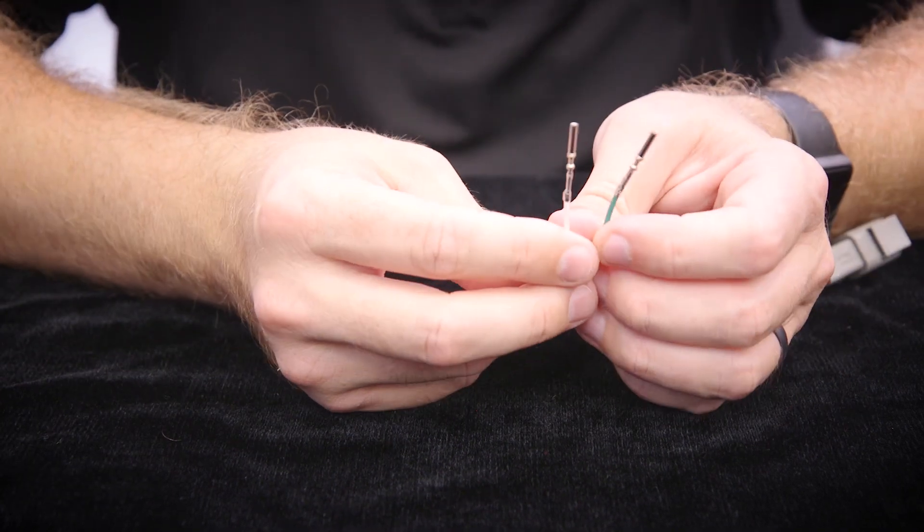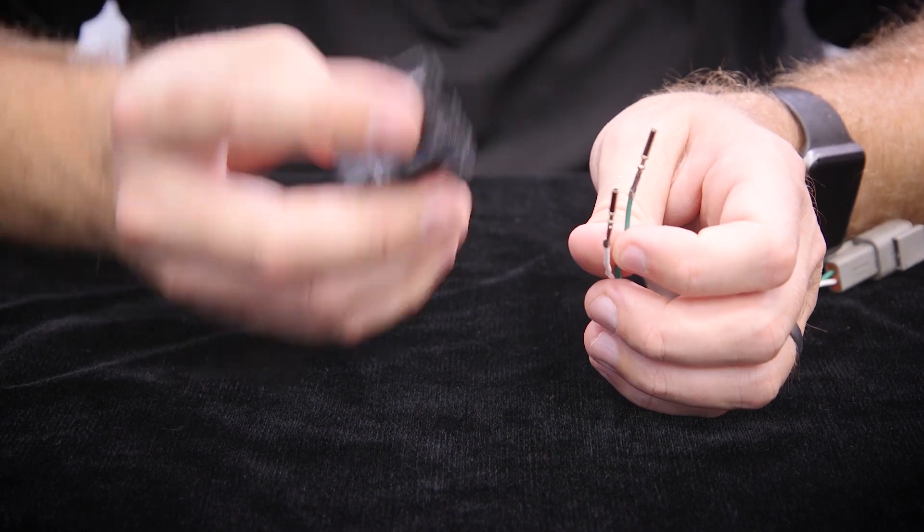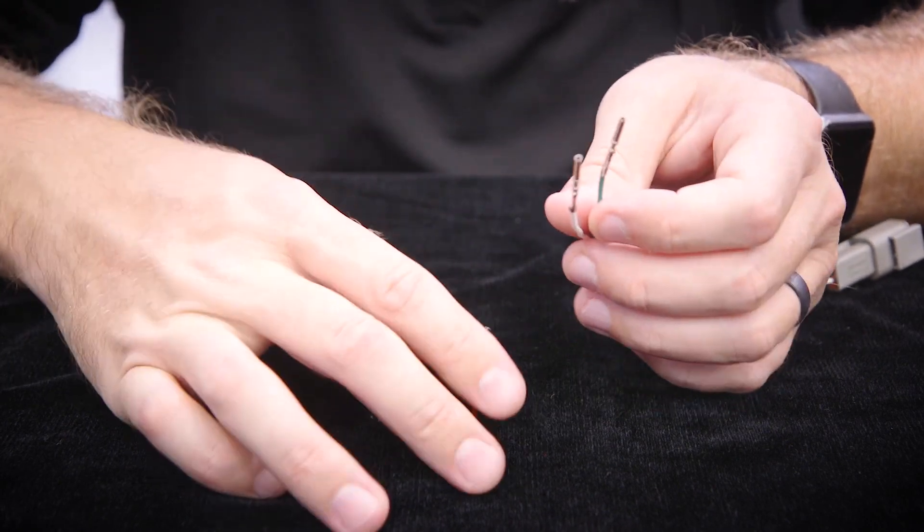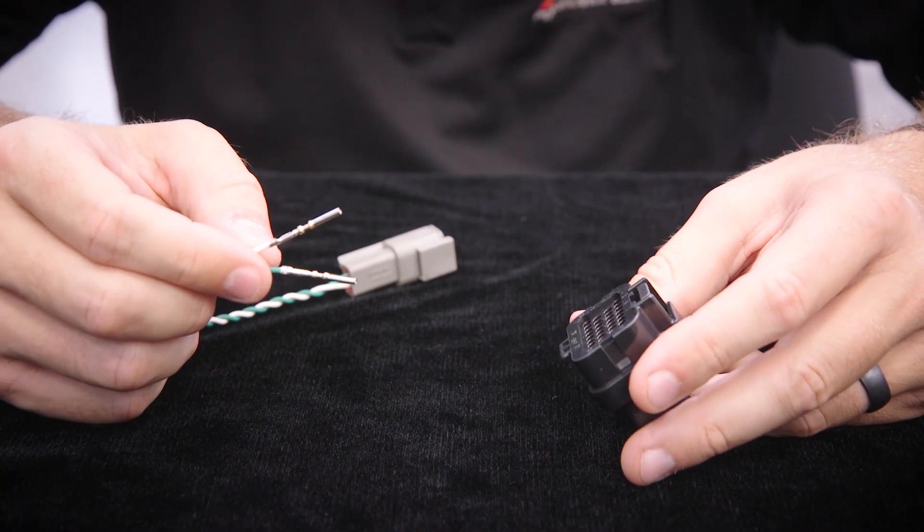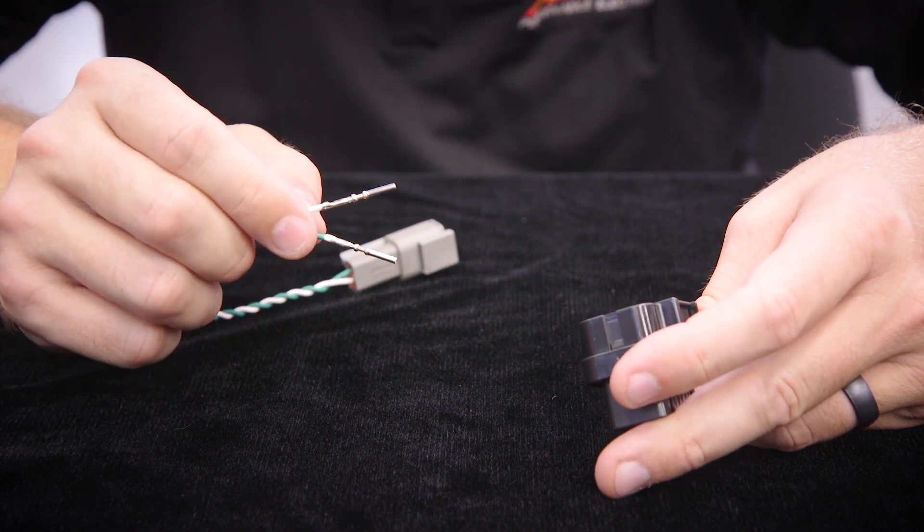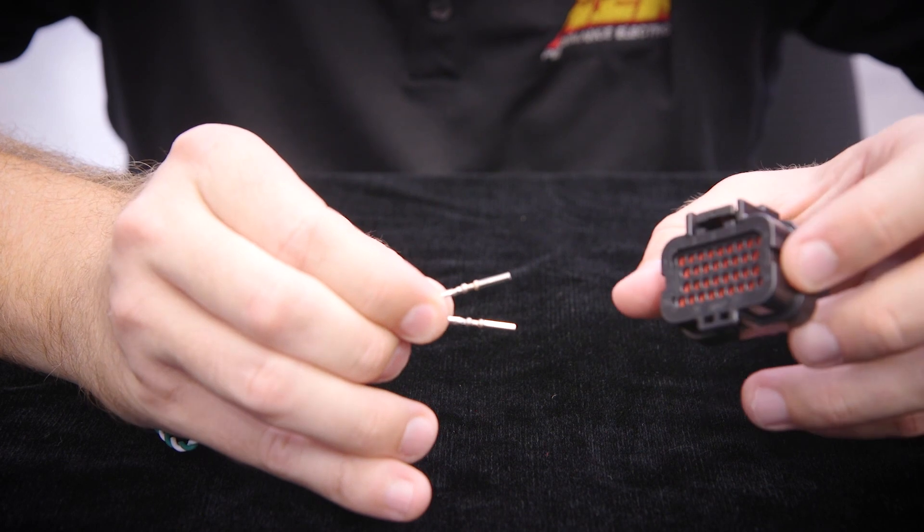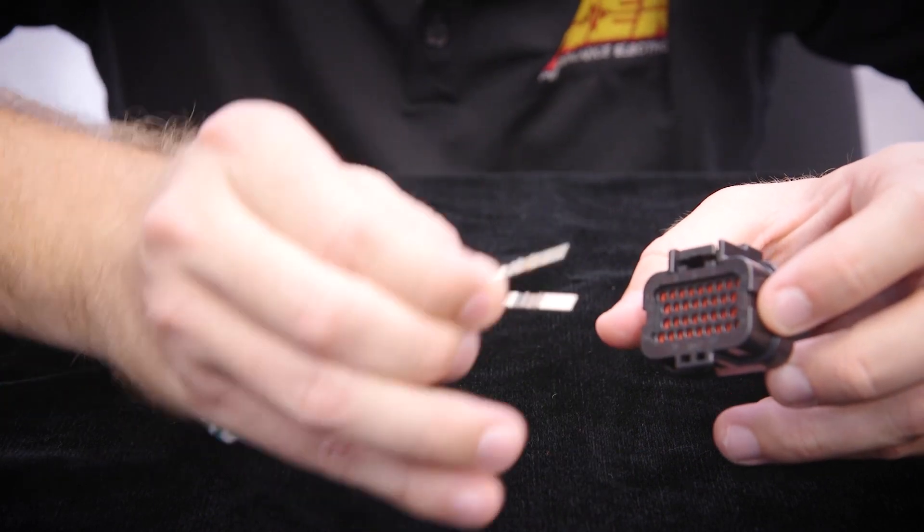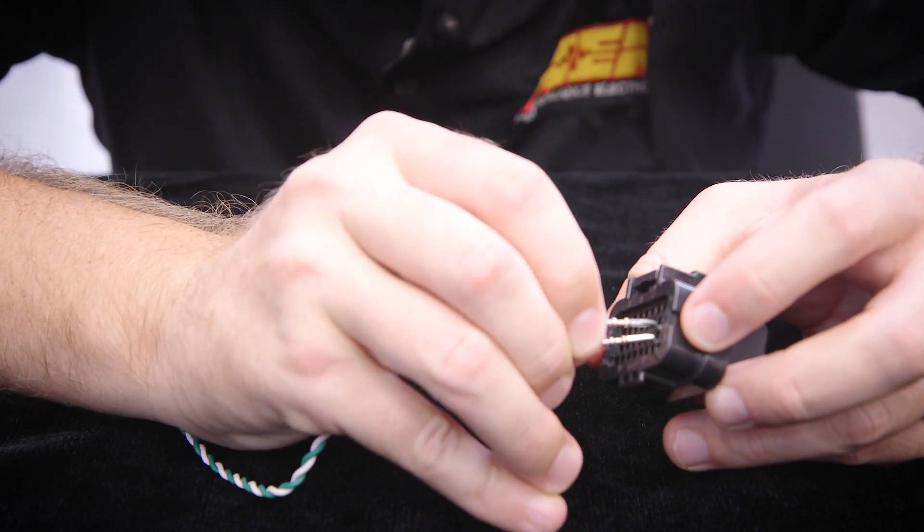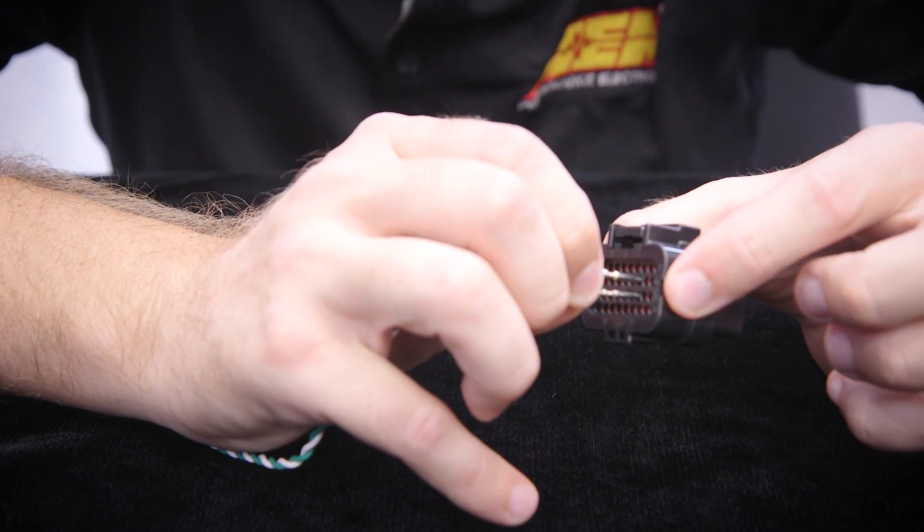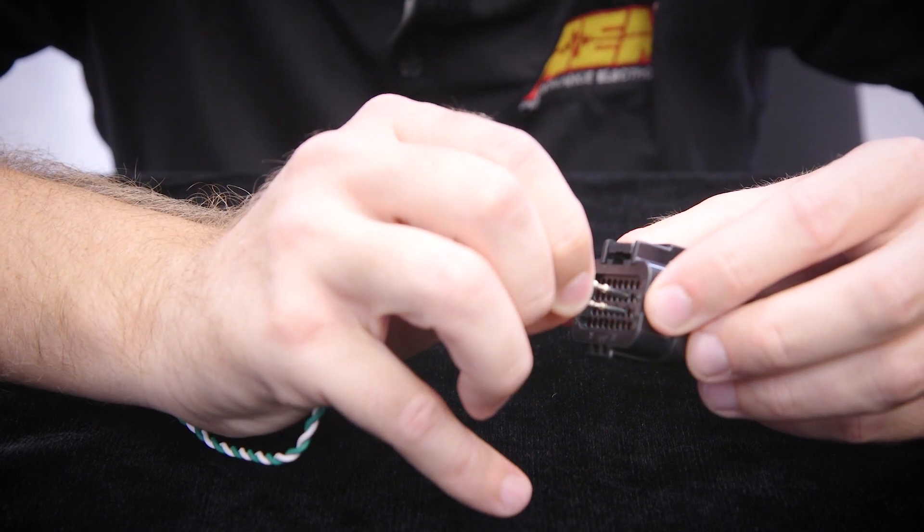Okay now that we've got our terminals crimped we're going to go ahead and pop them into our connector here. Our CAN high wire goes to pin 15 and our CAN low wire goes to pin 23. So this is a very simple contact to insert into this connector. We're going to put our CAN high wire into 15, CAN low into 23.